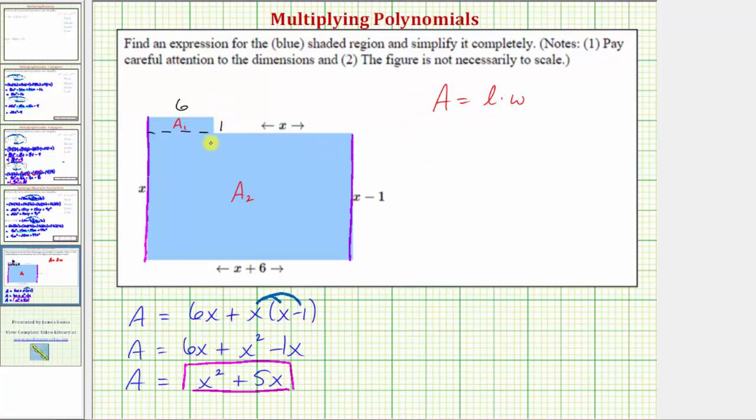And now we can find both smaller areas, A sub one and A sub two. A sub one is equal to length times width, which is six times one, or six square units. A sub two is equal to x plus six units times x minus one units. So now we know the total area of the blue shaded region is also equal to six plus the quantity x plus six times the quantity x minus one. Let's multiply this out and simplify to make sure we do get x squared plus five x.